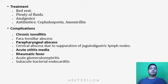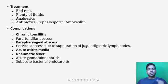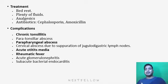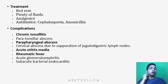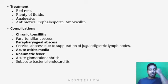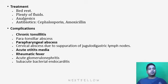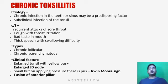Complications of acute tonsillitis include: chronic tonsillitis from repeated infection; peritonsillar abscess in the tonsillar bed; parapharyngeal abscess; cervical abscess from involvement of the jugulodigastric nodes presenting as a neck abscess. Infection may ascend through the Eustachian tube causing acute otitis media. Other complications include rheumatic fever, acute glomerulonephritis, and subacute bacterial endocarditis.